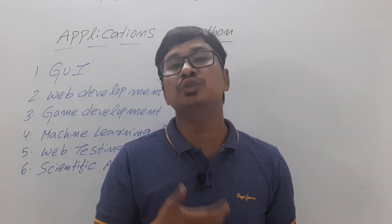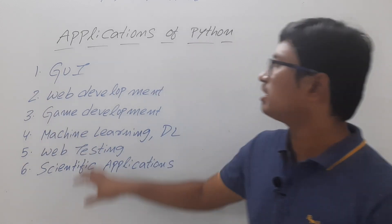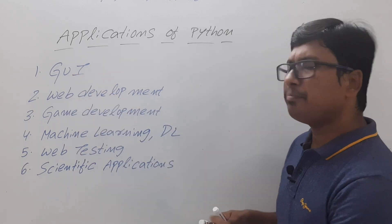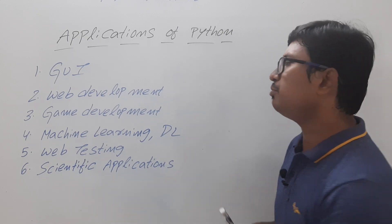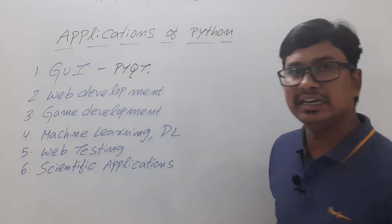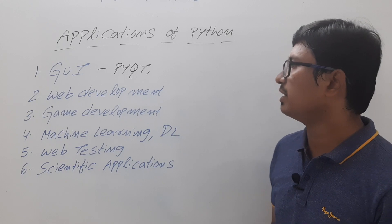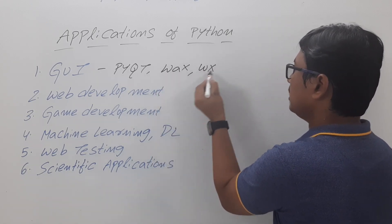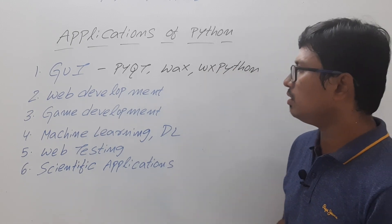Now let me discuss the applications and the packages you should learn to work in each domain. For graphical user interfaces, Python supports various packages. We have PyQt, which has various versions like version 3, 4, and 5, and you also have the packages called Wax and WxPython. Any one of these packages you can learn to work with graphical user interfaces using Python.